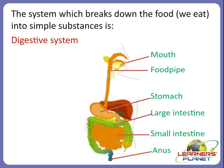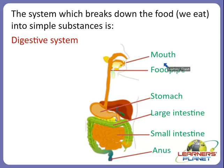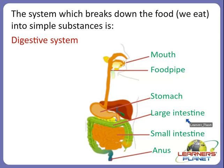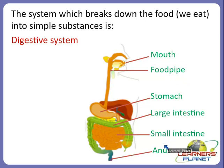The digestive system breaks down the food we eat into simple substances. It consists of the mouth, food pipe, stomach, large intestine, small intestine, and anus. All these organs are included in the digestive system which helps in breaking down food into simple substances.